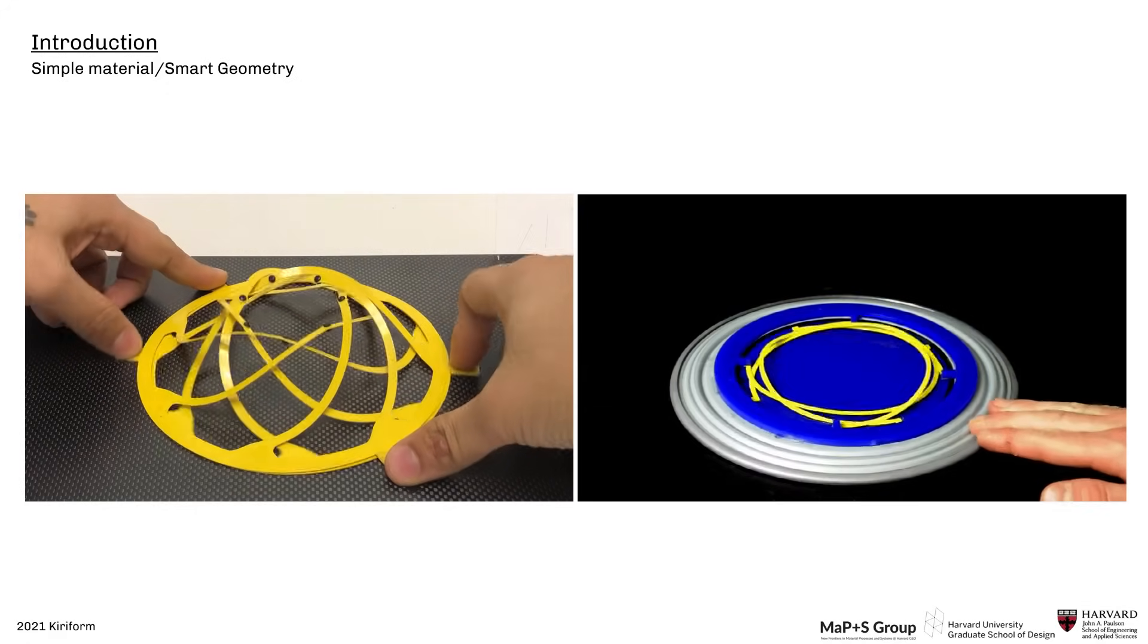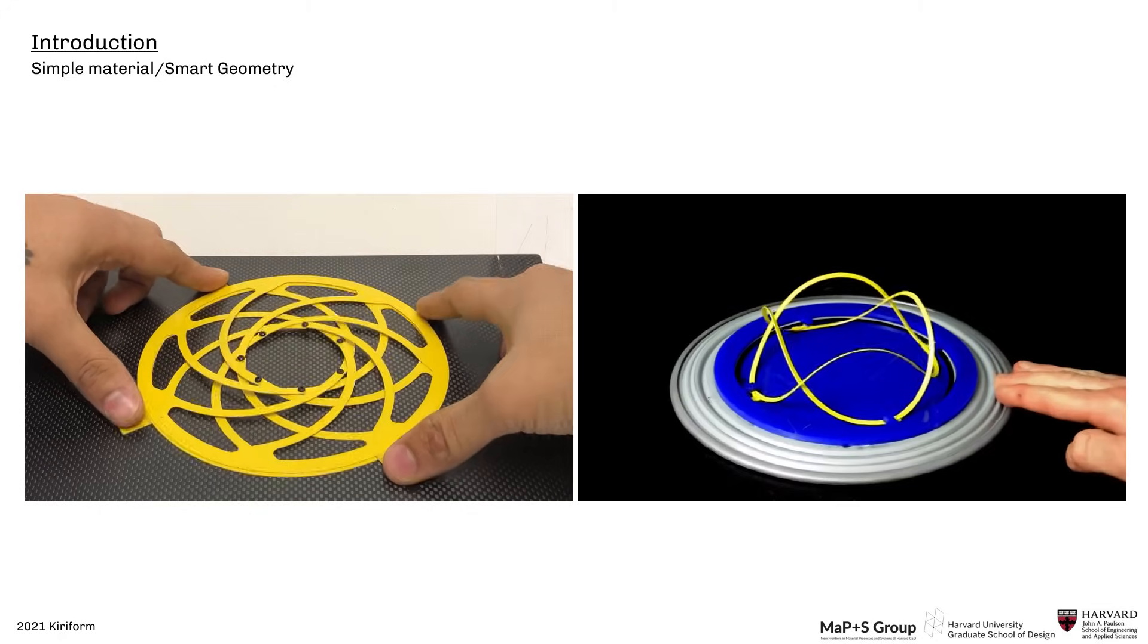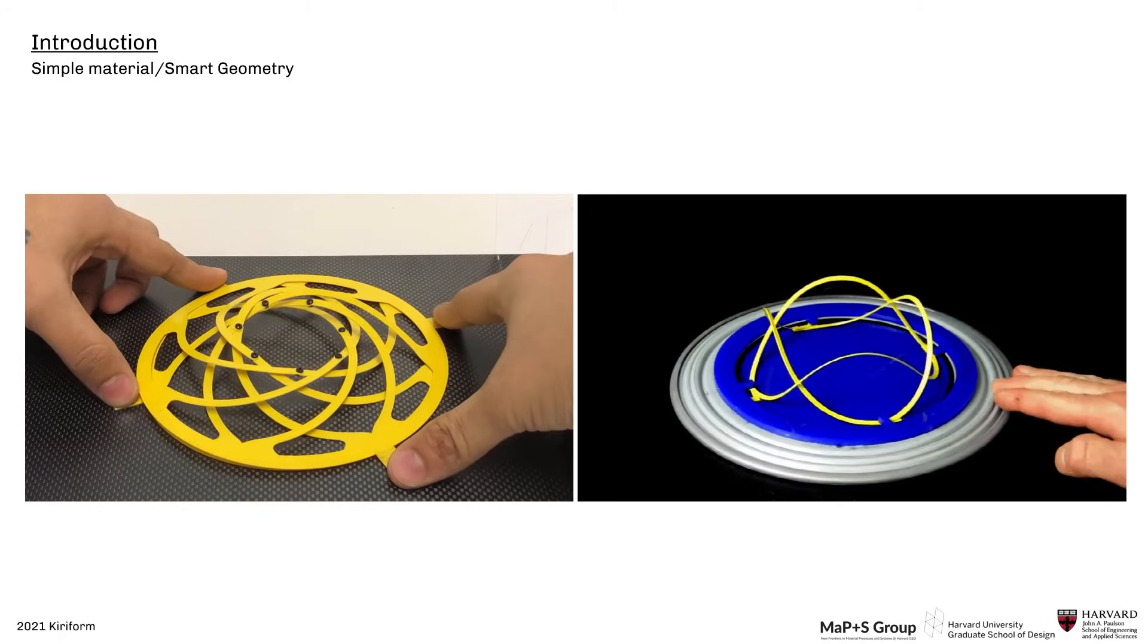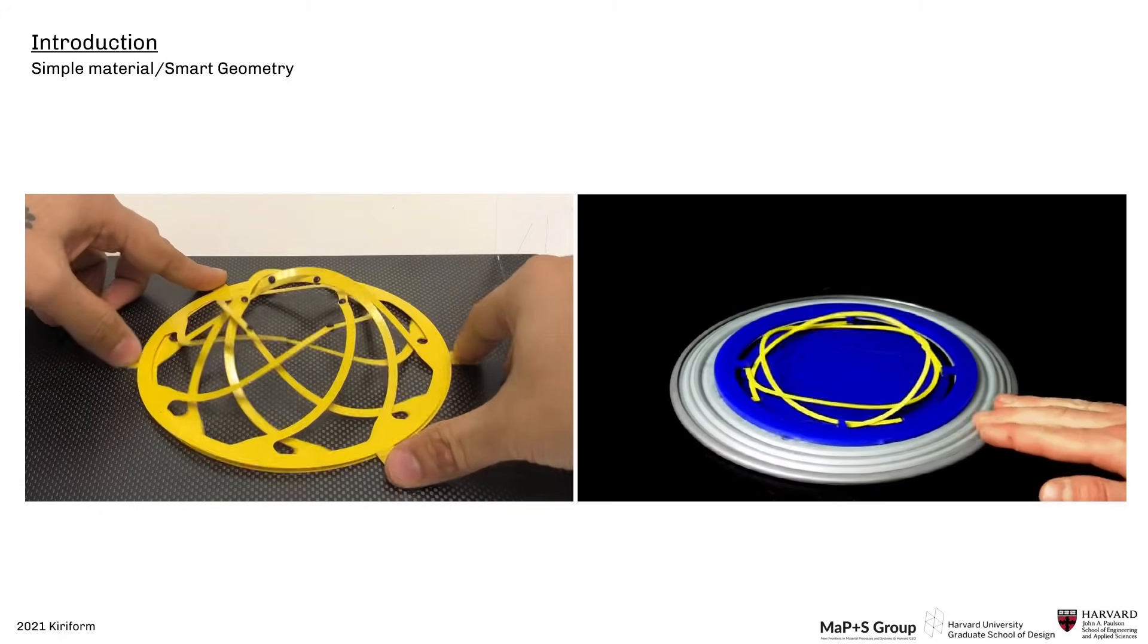Kiriform is a patented system that uses material elasticity and out-of-plane buckling to go from flat to 3D with minimal actuation.